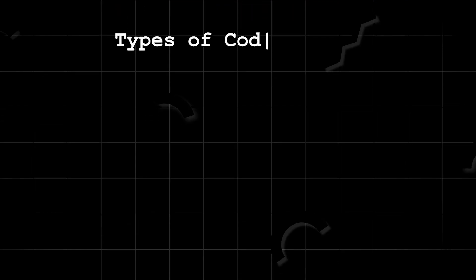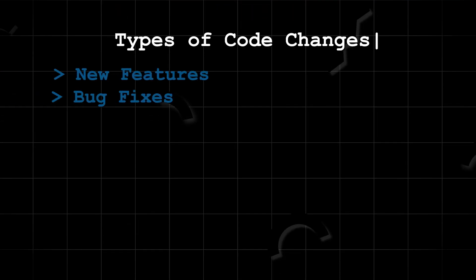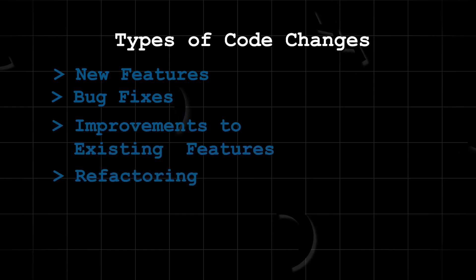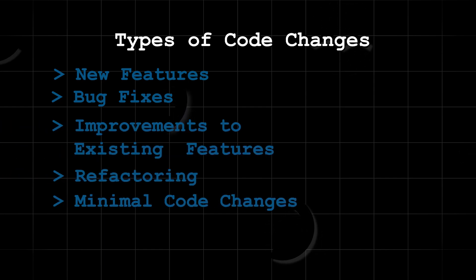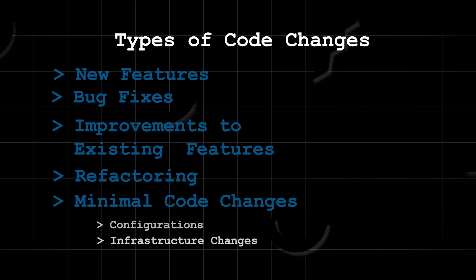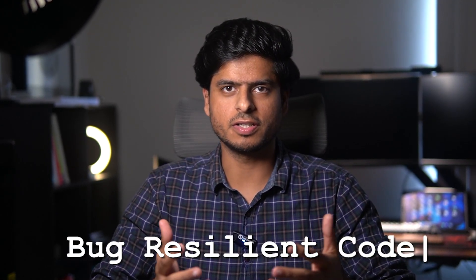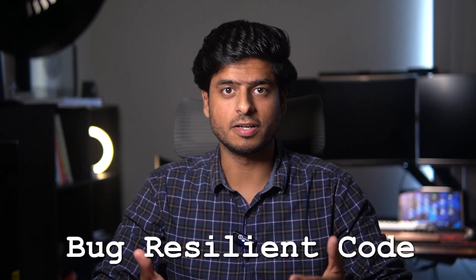In software development, engineers often make five types of code changes: new features, bug fixes, improvements to existing features, refactoring, and some minimal changes like configuration, infrastructure changes, and documentation updates. Having corresponding tests for at least four of these changes is crucial for achieving bug-resilient code.